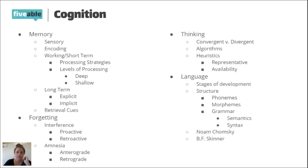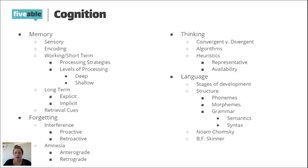For interference, we use the acronym PORN. Proactive interference is when old information interferes with the learning or remembering of new information. Retroactive interference is when new information interferes with pulling out or remembering old information. A big focus of the cognition unit is memory — the different ways we remember, the different systems, and the ways we forget.